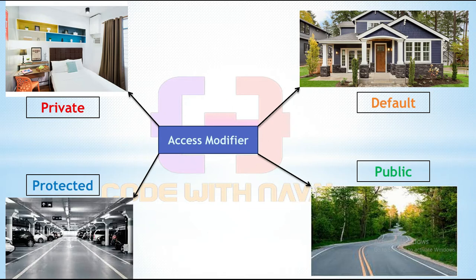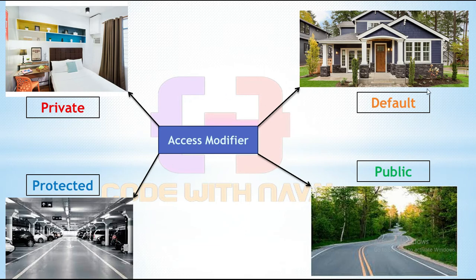This home has default access. Then we have protected. If you are living in a society, you will see there is a common shared parking. Only a security guard can guide who parks where. We can say this common parking is protected. Then we have public — the road is public. Anyone can access it. Anyone can drive their car or bike because it's public property. So you can explain this example if an interviewer asks you for a real-life example of access modifiers. This is a very simple example.